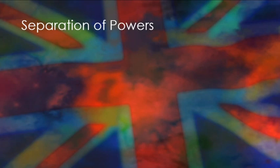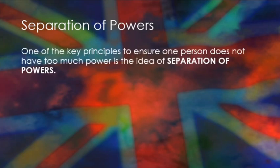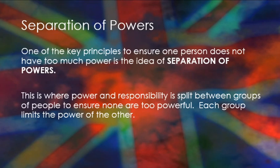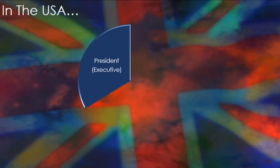One of the key principles to ensure one person doesn't have too much power is separation of powers — you don't put your eggs all in one basket. You don't give absolute power to one person. There's an old quote: power corrupts; absolute power corrupts absolutely. The more power you give someone, the more they could do right, but also the more power they have to do wrong. This is where power and responsibility are split between people to ensure that nobody becomes too powerful.